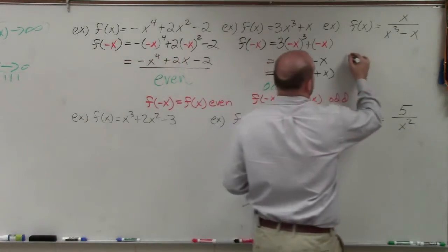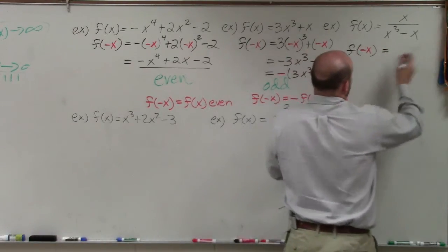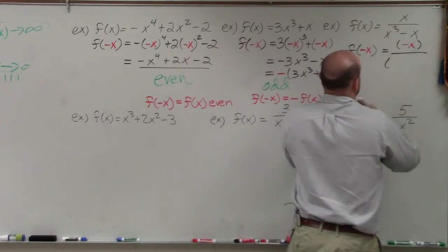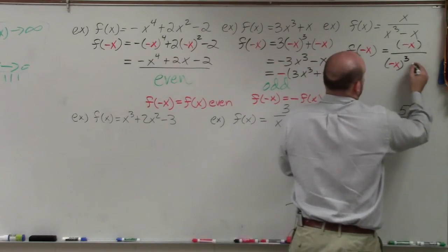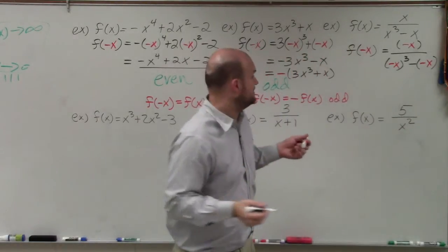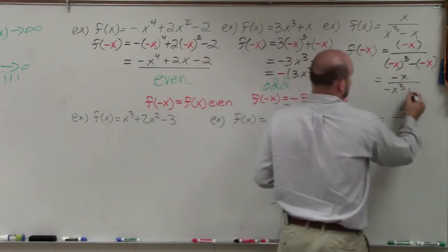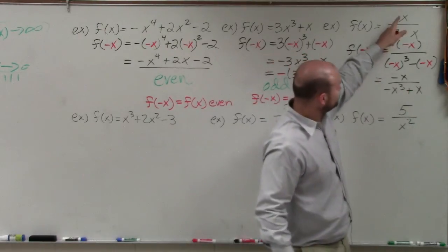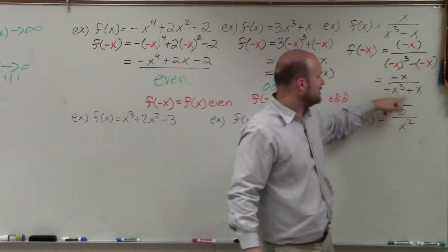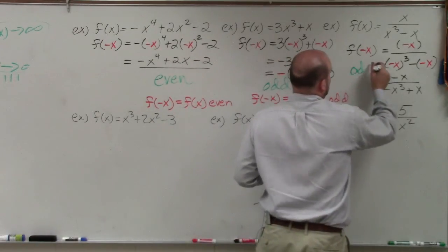Let's look at the next one. Again, we evaluate for f of negative x. I have negative x divided by negative x cubed minus negative x. Negative x is just negative x. Negative x cubed is negative x cubed. And minus the negative x is plus x. The sign is negated for all terms, so you could factor out a negative. The answer is odd.